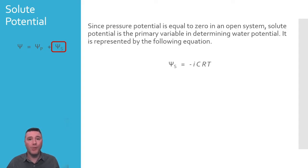Here's the equation for solute potential. Before breaking down each of those variables, please make careful note of the fact that solute potential for a solution is negative. The first variable, i, represents the ionization constant of the solute. Some solutes, like sodium chloride, dissociate into sodium ions and chloride ions when they dissolve.